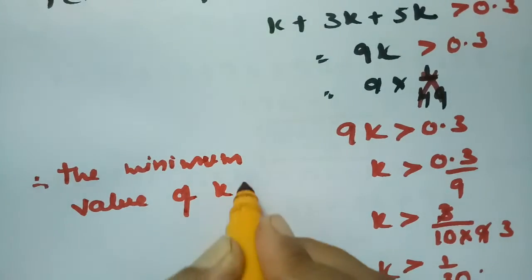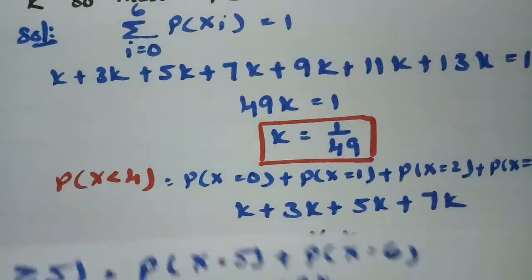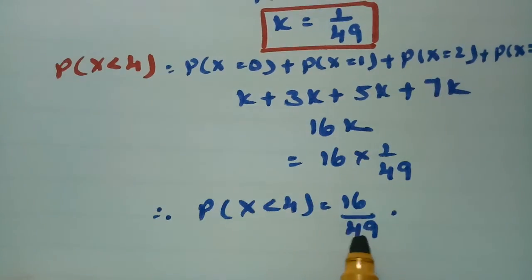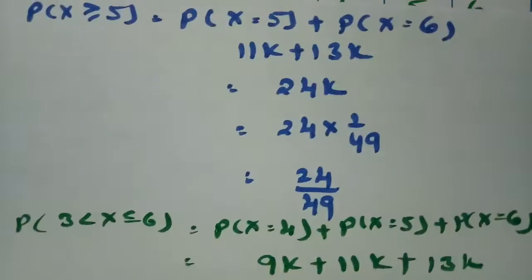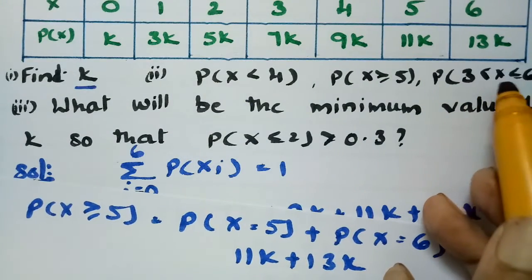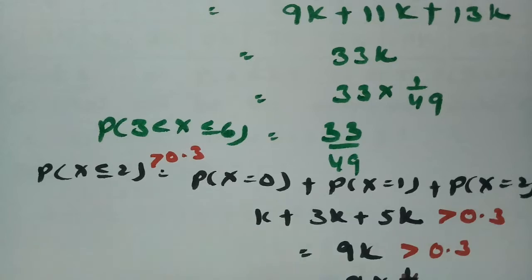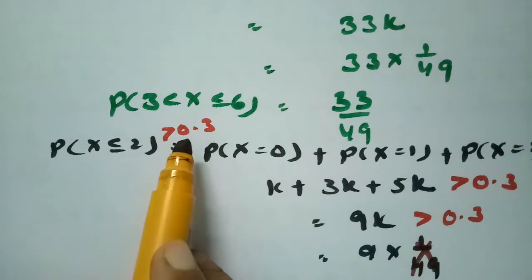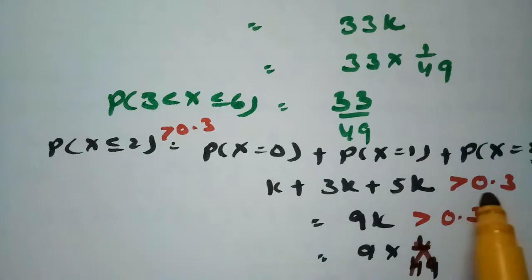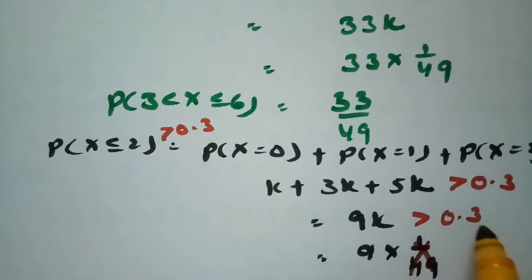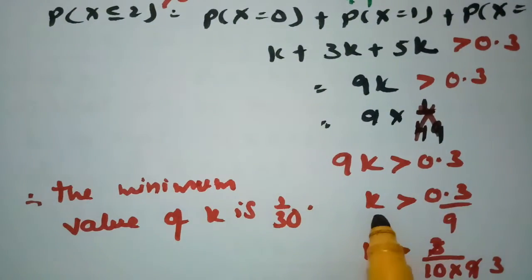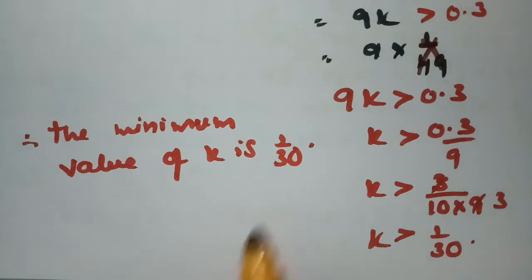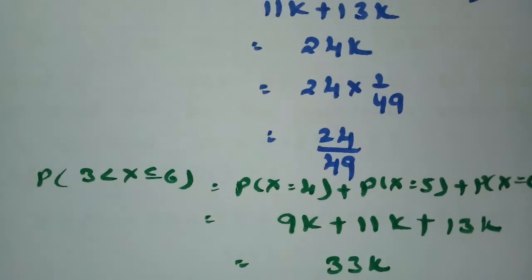To summarize: the value of k is 1/49. The probability of x less than 4 is 16/49, probability of x greater than or equal to 5 is 24/49, probability of 3 less than x less than or equal to 6 is 33/49. For the minimum value of k such that probability of x less than or equal to 2 is greater than 0.3, we found 9k greater than 0.3, giving a minimum value of k equal to 1/30.